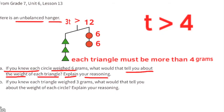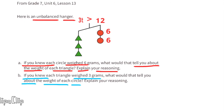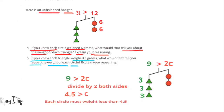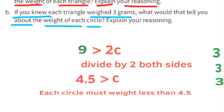Part b: If each triangle weighed 3 grams, what would that tell you about the weight of each circle? Three grams times 3 triangles equals 9 grams. Since the hanger is tilting to the left, 9 grams is greater than 2 circles. Divide both sides by 2: 4.5 is greater than c. That means each circle must have a value less than 4.5.